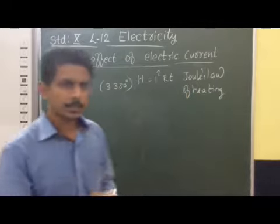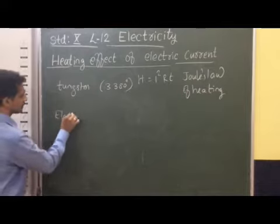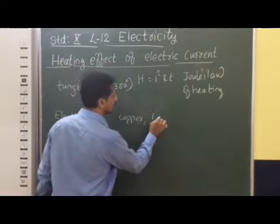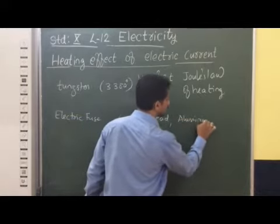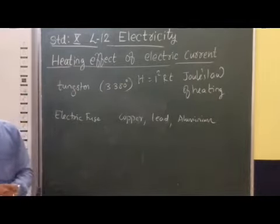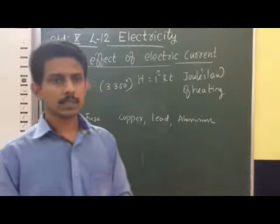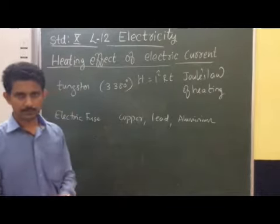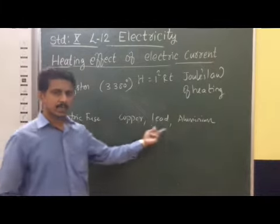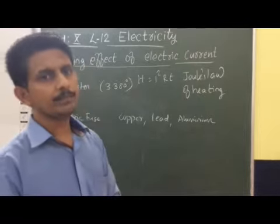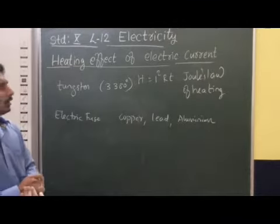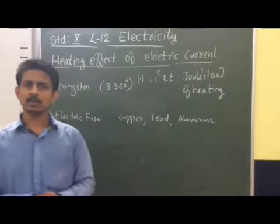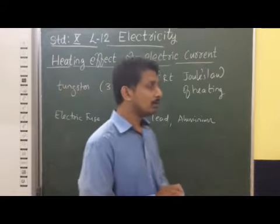Another application is the electric fuse. The fuse wire is usually made of copper, aluminum, or lead alloy — materials with a low melting point. Whenever excess current passes through this fuse, the wire gets heated and gradually burns, breaking the circuit. So Joule's Law of Heating is applied in the electric fuse. Similarly, appliances like an electric iron and electric toaster also work on Joule's Law of Heating.